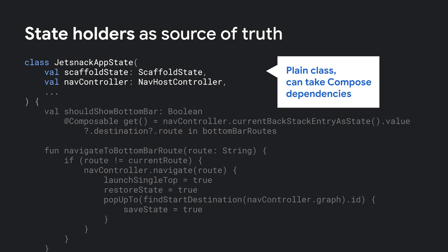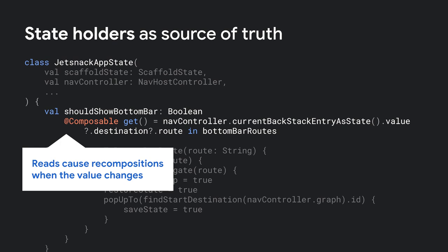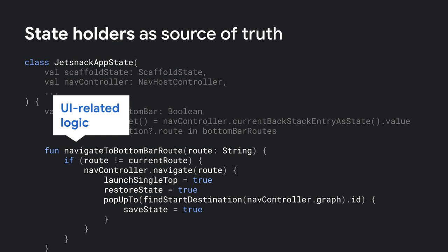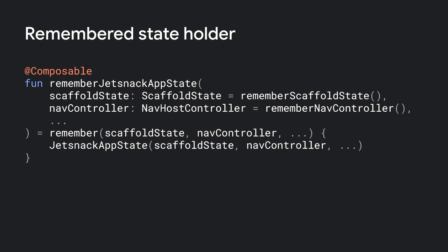This state holder is a plain class that will be created and remembered in the composition, scoped to the composable that creates it. JesnackAppState is just a plain class, and since it follows the composable lifecycle, it can take composable dependencies without worrying about memory leaks. State holders can have composable properties that cause recompositions if they change — in this case, whether or not to show the bottom bar — and they contain UI-related logic such as navigation logic. It is a good practice to provide methods to remember state holders if they take dependencies, passing in the dependencies to get a new instance if any of them change.